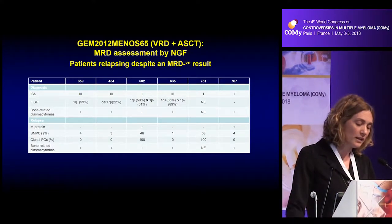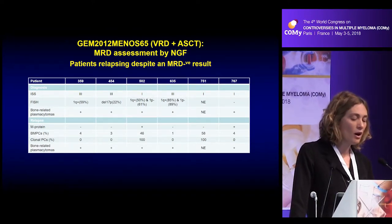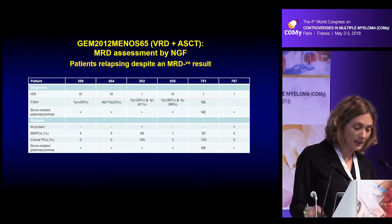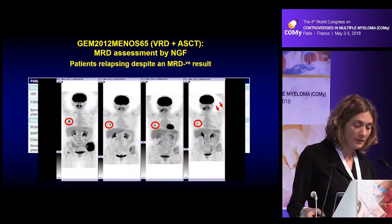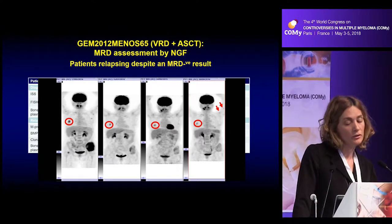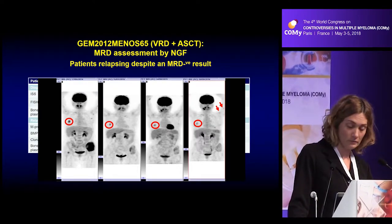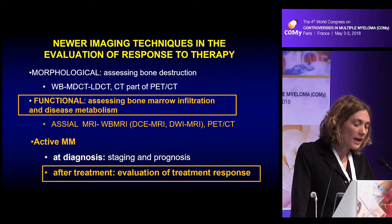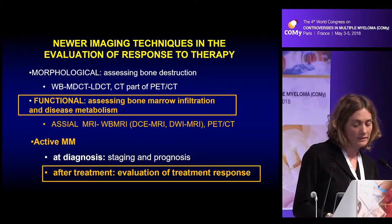The Spanish group demonstrated that patients with bone-related or extra-medullary plasmacytomas at diagnosis are at the highest risk of having residual disease outside the bone marrow. In six such patients who had a plasmacytoma diagnosis, after therapy they reached MRD-negative results in the bone marrow with high sensitivity — receiving VRD and autologous stem cell transplantation — but retained some positivity in the focal lesions. Functional imaging techniques are now able to evaluate disease metabolism suppression after therapy.